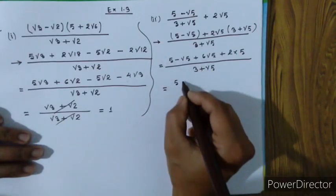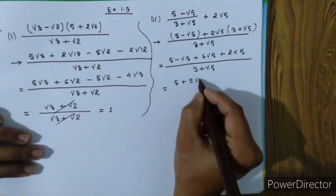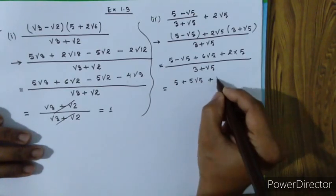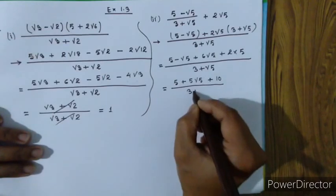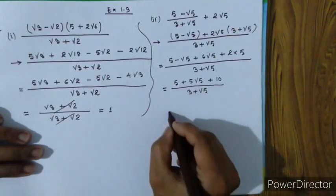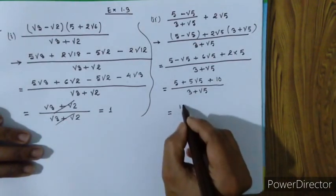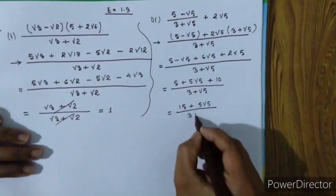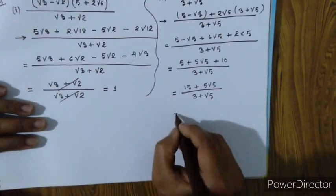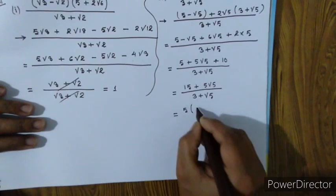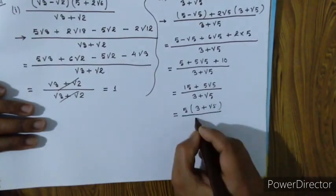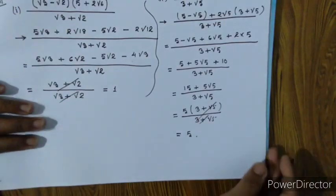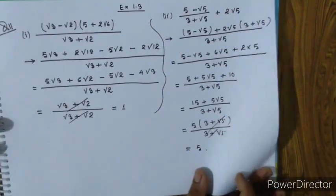Three plus root five. Five root five. Ten. 10 by 3 plus root 5. Now the answer is 15 plus 5 root 5 by 3 plus root 5. The answer simplifies to 5.